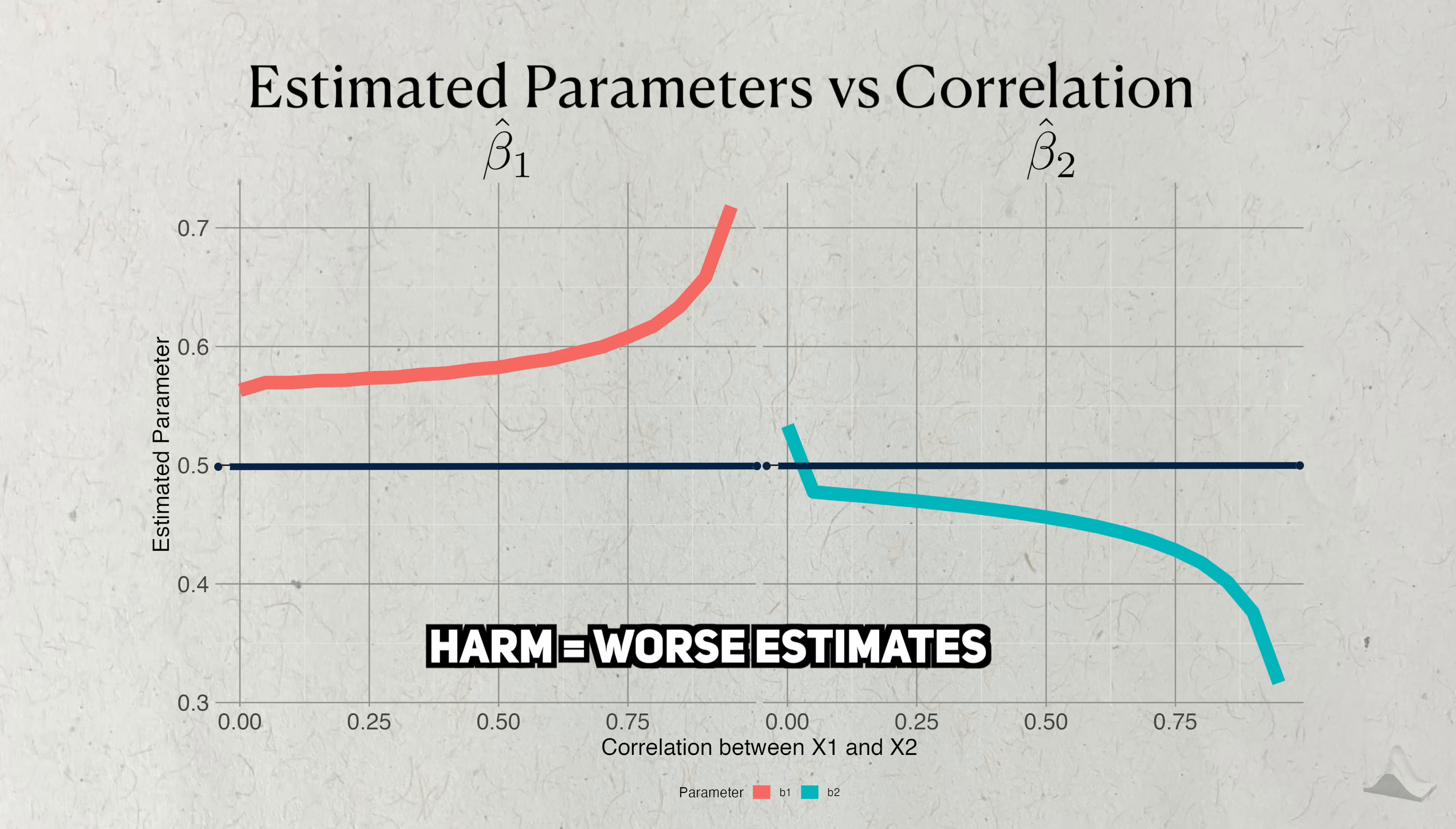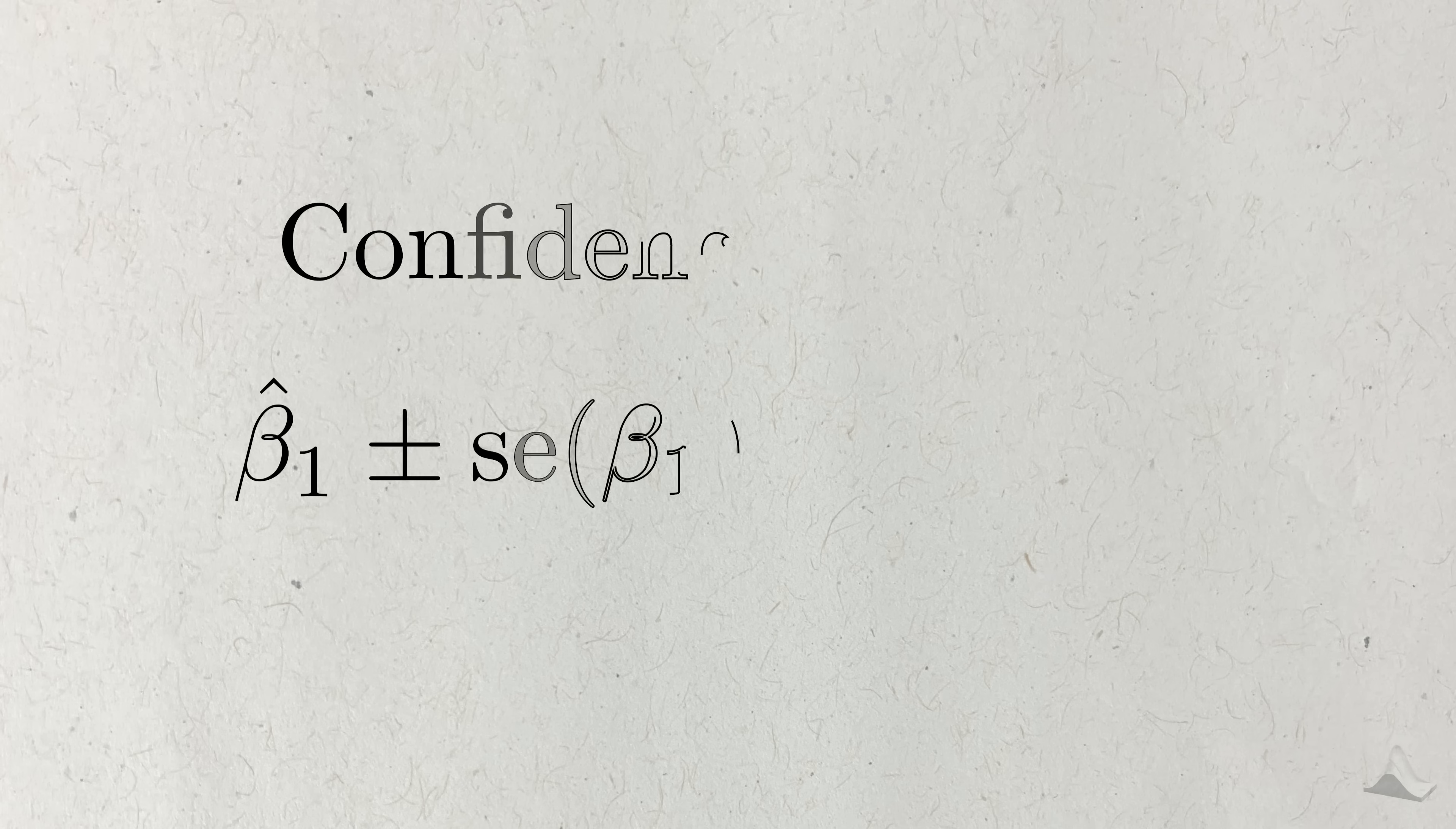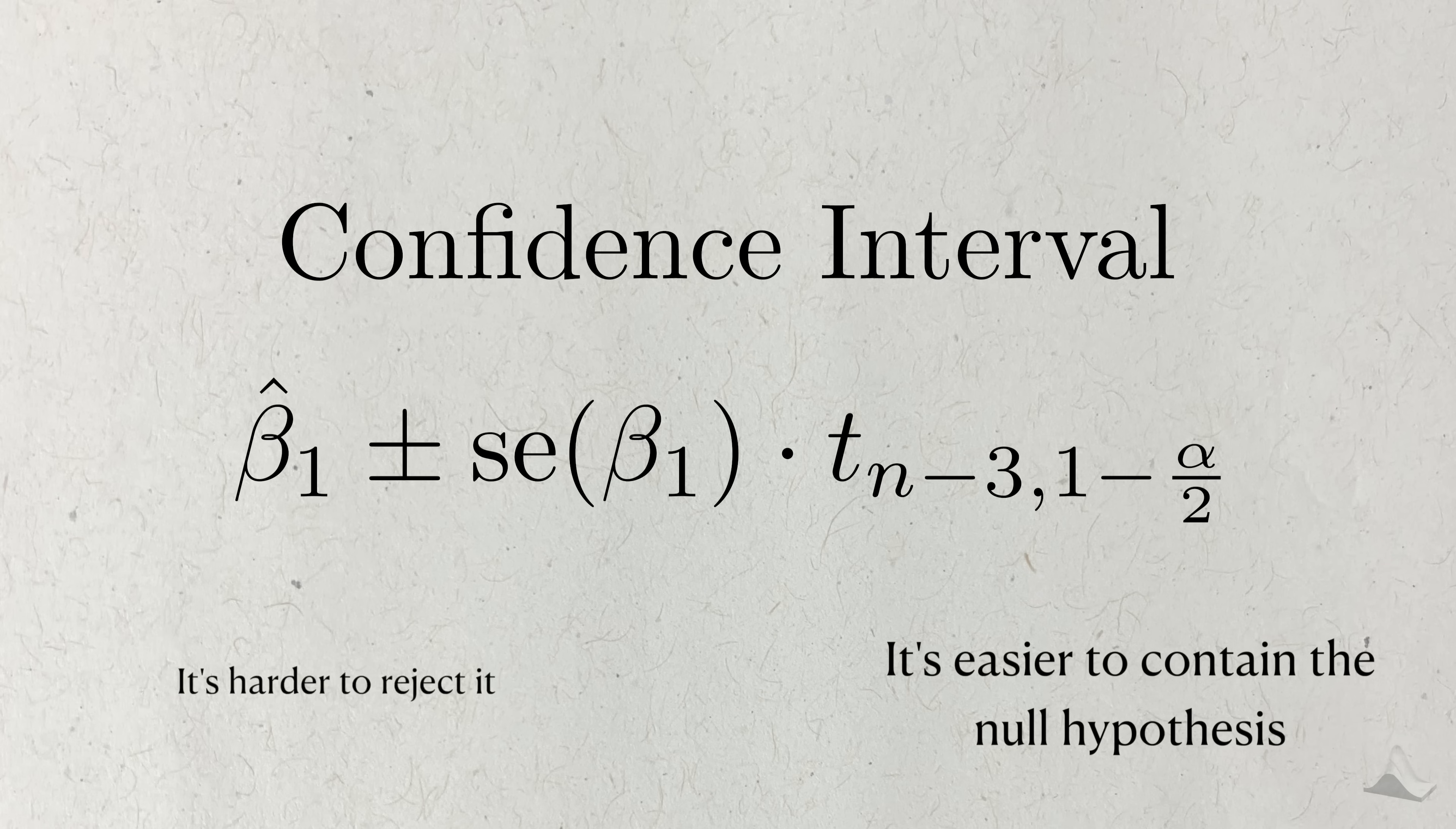Here's a similar plot looking at the standard errors of the estimates. As the correlation increases, the standard errors also increase. Not only that, but this increase looks like it increases exponentially. This is important because the standard errors control how large the confidence intervals are. Very roughly speaking, if the confidence interval is larger, it's easier for them to contain the null hypothesis and make it so we fail to reject it. This directly represents a decrease in power.